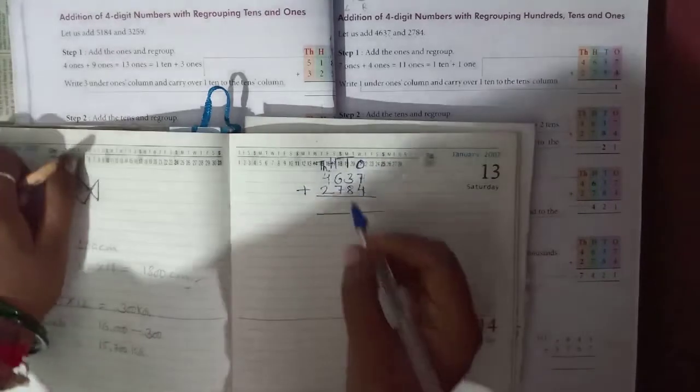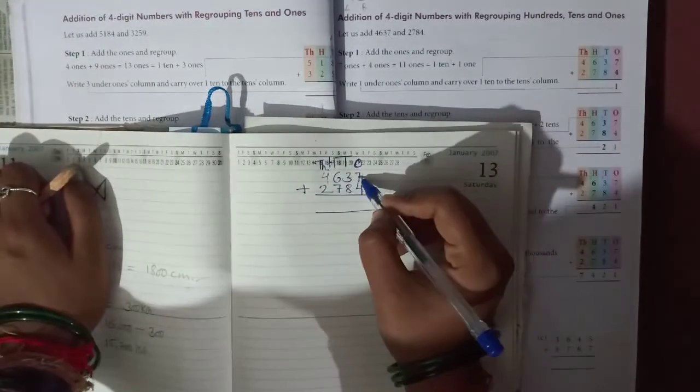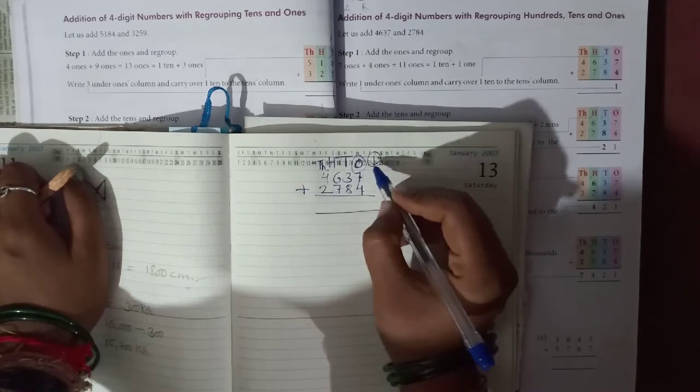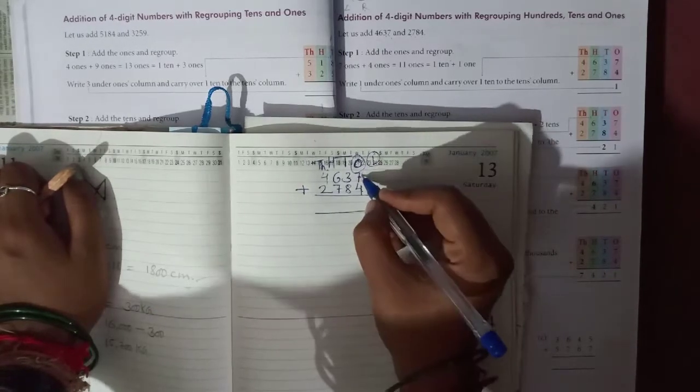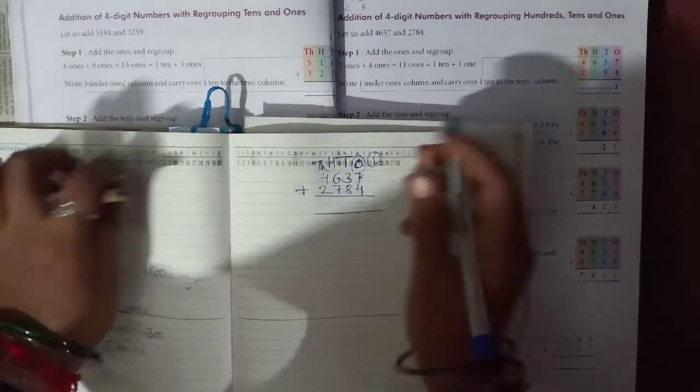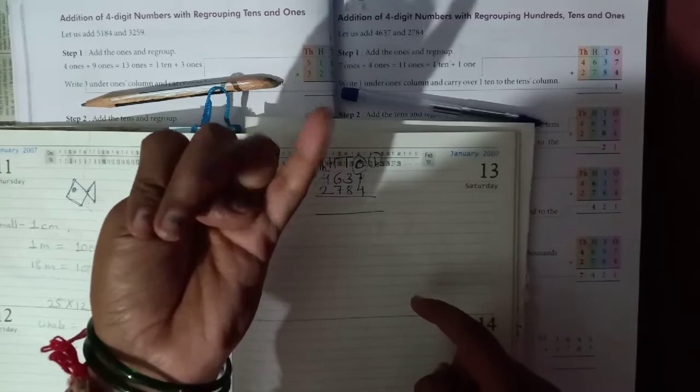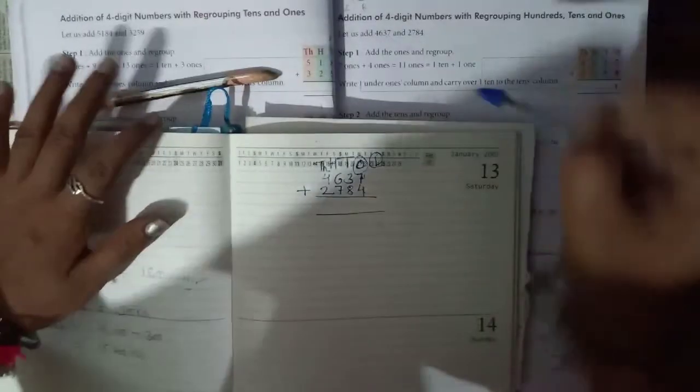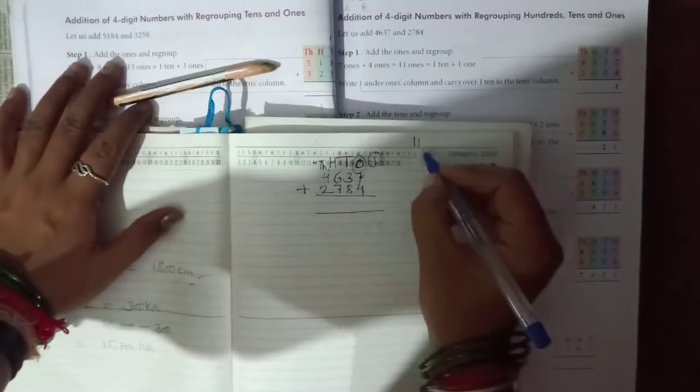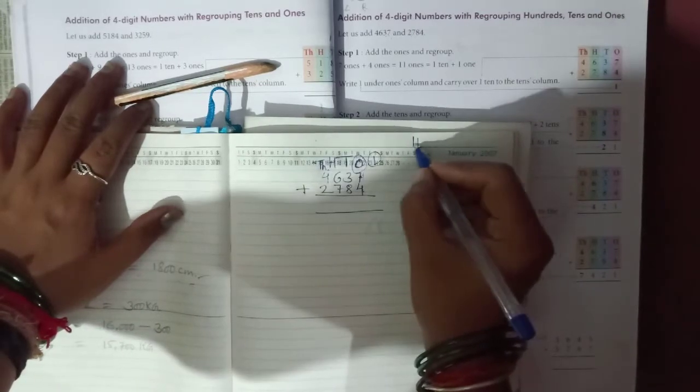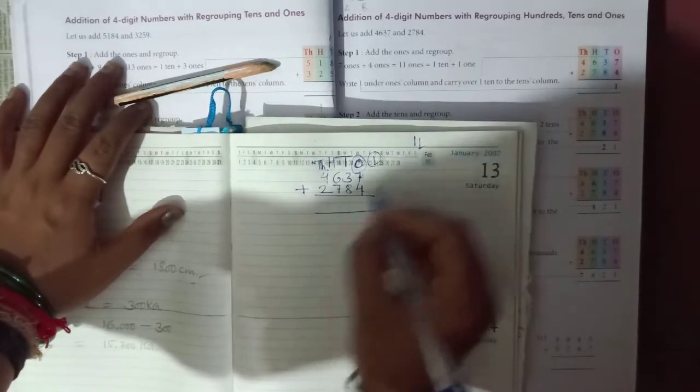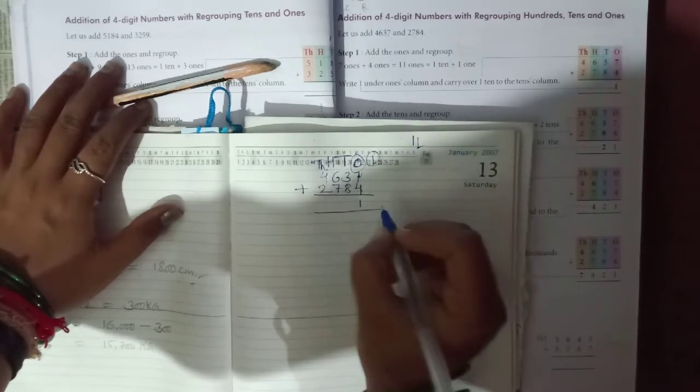First of all, you will regroup in their groups: one, ten, thousand, hundred. After that, you will add the ones position number first. First number is one, so add this seven plus four. After seven: eight, nine, ten, eleven. So eleven.